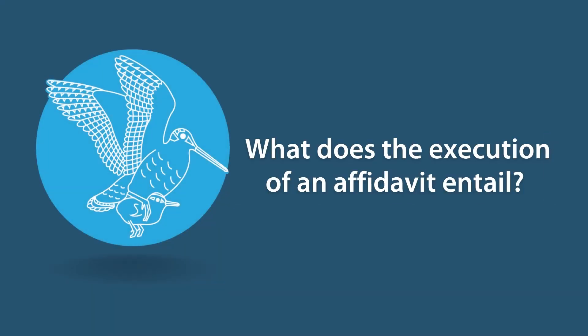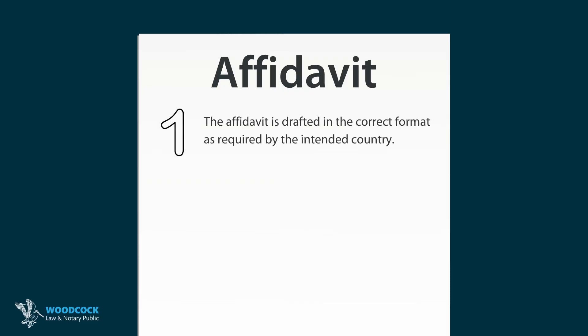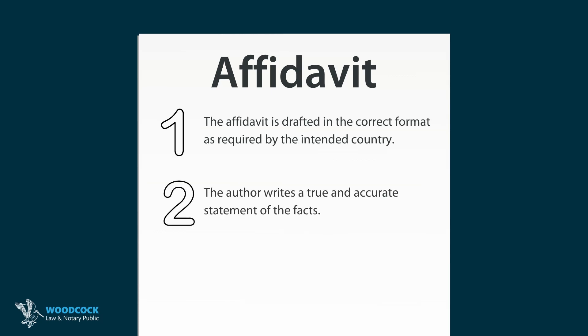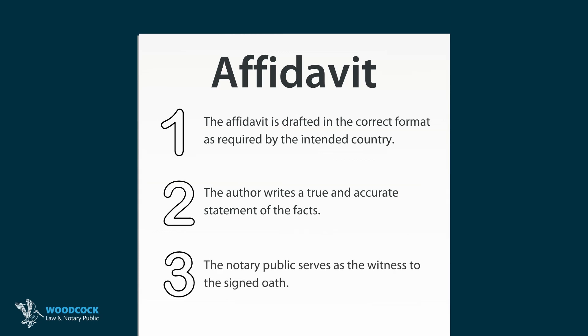What does the execution of an affidavit entail? Firstly, the affidavit needs to be drafted in the correct format as required by the intended country that your affidavit will be used in. Then, the author writes a true and accurate statement of the facts as understood to be true by themselves. The notary public then serves as the witness to the signed oath, confirming that the person making the oath and signing the document is the same person who has been recorded as offering the affidavit.